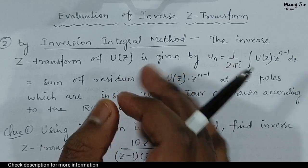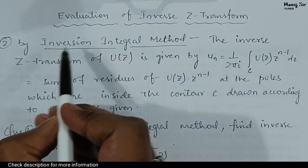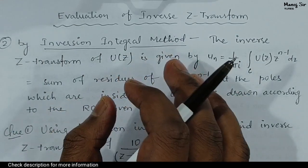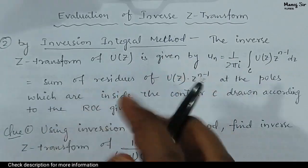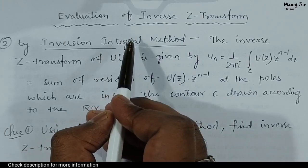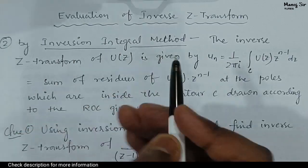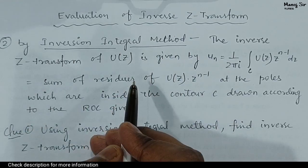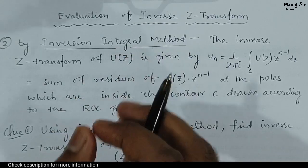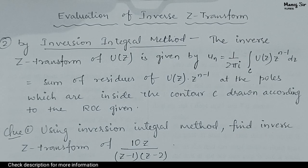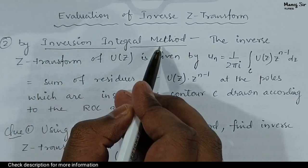In the previous video, that is video number 11, we evaluated the inverse Z transform by the help of the first method, which was the partial fraction method. In that video we solved problems based on that method. In this particular video we are going to understand how to evaluate inverse Z transform by the inversion integral method, or residue method, and we will take a problem and solve it.